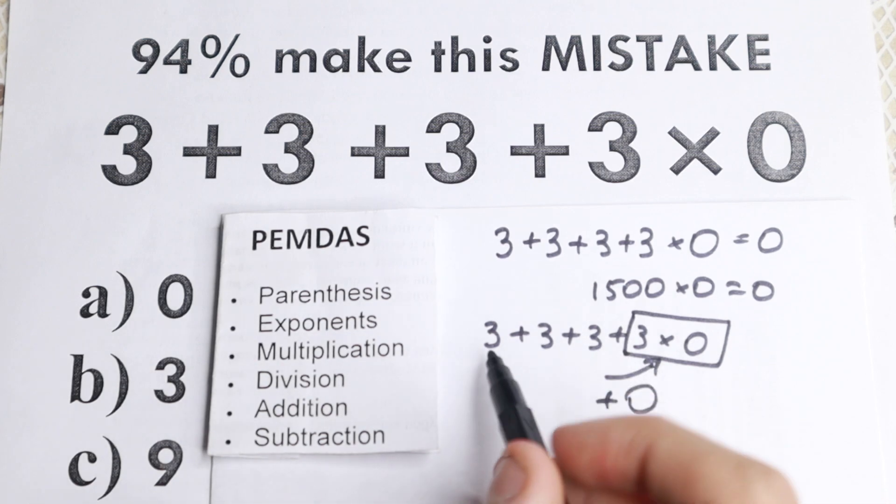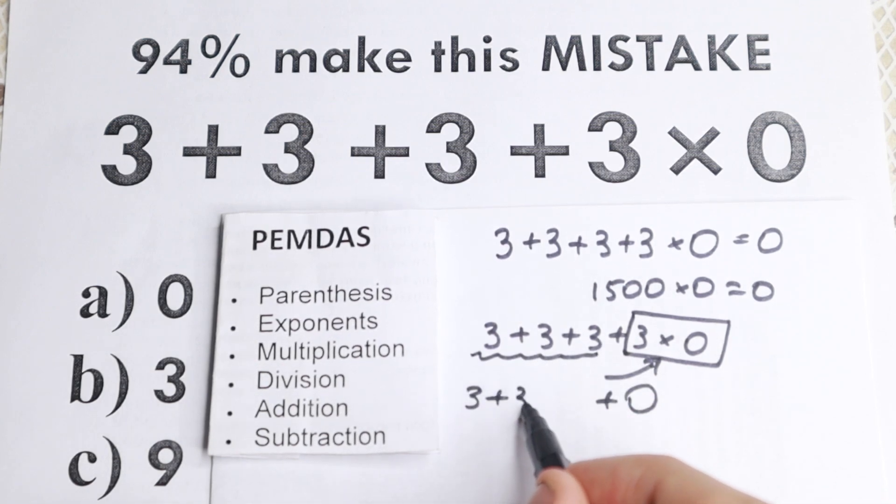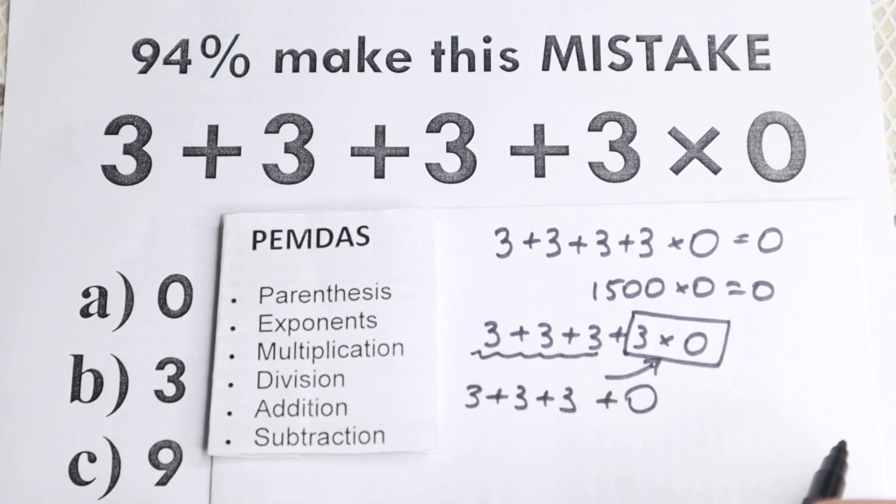So we have like 0 in the end. And we still have, in the beginning, we have these two, we have 3, 3, 3, we have 3 plus 3 and plus 3. And then we have like 3 plus 3 plus 3 equal to 9. So the correct answer is 9.